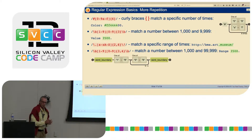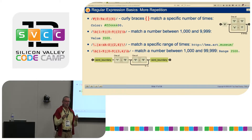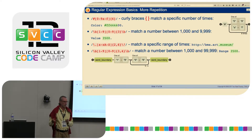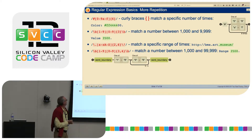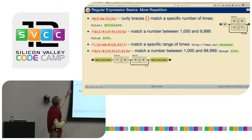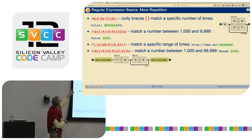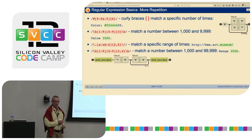Now let's talk about repetitions. So far we learned: zero or one (?), zero or multiple (*), or one to multiple (+). Now we can be even more specific. If you use curly braces and a number, it says we want to have exactly that many times — like {6} means exactly six times. So #[0-9A-Fa-f]{6} is an HTML color code — it captures exactly six hex characters.